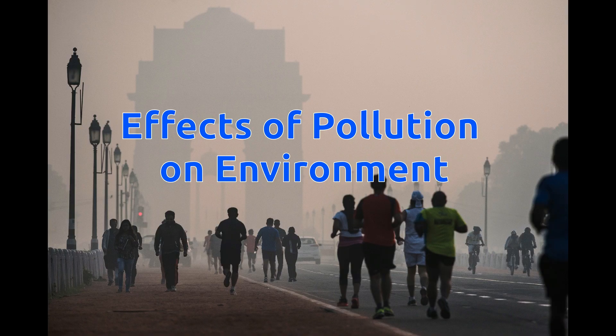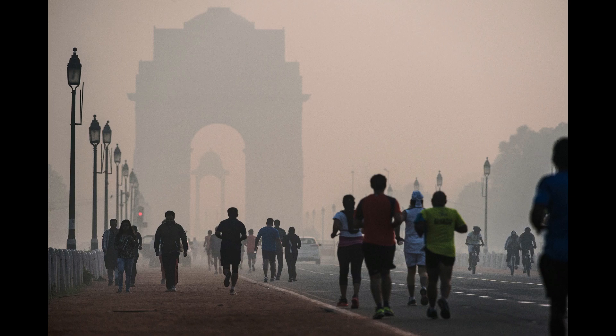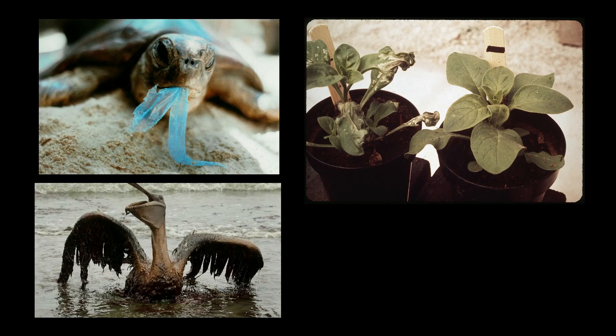Pollution affects not only humans but also animals and living beings in the surroundings. Birds, fish, plants, macro organisms, and other animals are all affected by pollutants. Pollution not only affects living beings on land but also has dangerous effects on aquatic animals and birds. Let us discuss the effects of pollution on different living organisms.